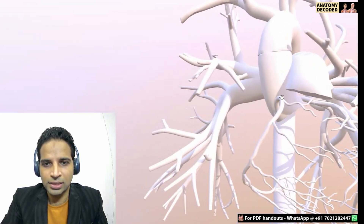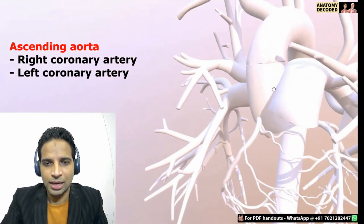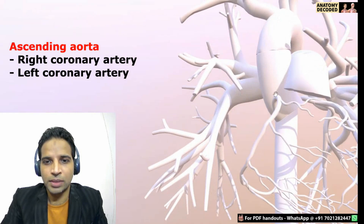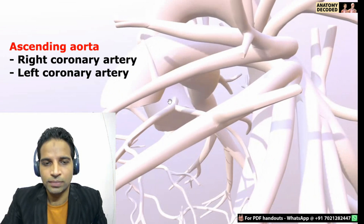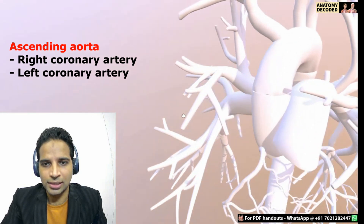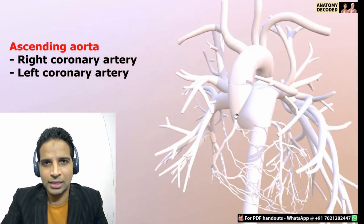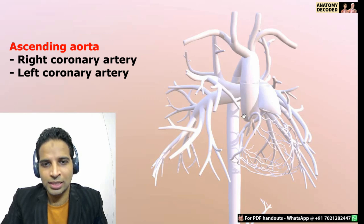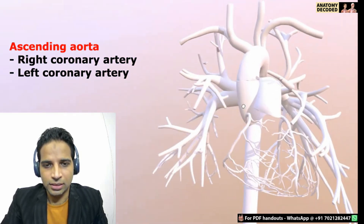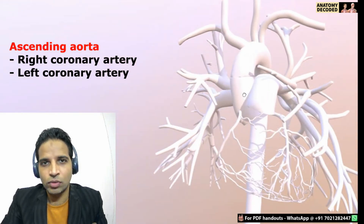Starting with the arteries from the ascending aorta: we can see the right coronary artery arising from the anterior aortic sinus — there is a bulge of the ascending aorta referred to as the aortic sinus. Similarly, there is the left coronary artery, which also arises from the ascending aorta, specifically from the left posterior coronary sinus. There is also a non-coronary sinus because no coronary artery arises from that sinus. So from the ascending aorta, the two main branches are the right coronary artery and the left coronary artery.